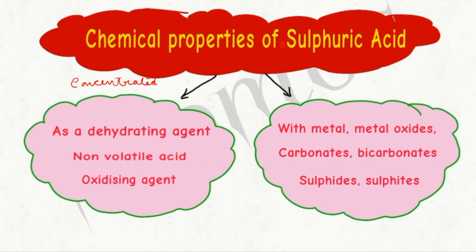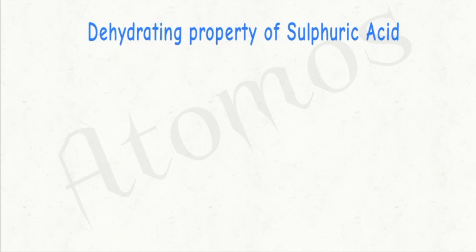Concentrated sulfuric acid can act as a dehydrating agent, non-volatile acid, and an oxidizing agent. In this video we will be discussing about the dehydrating property as well as the non-volatile acid property of concentrated sulfuric acid, and at the end of the video we will be discussing the board questions related to that.